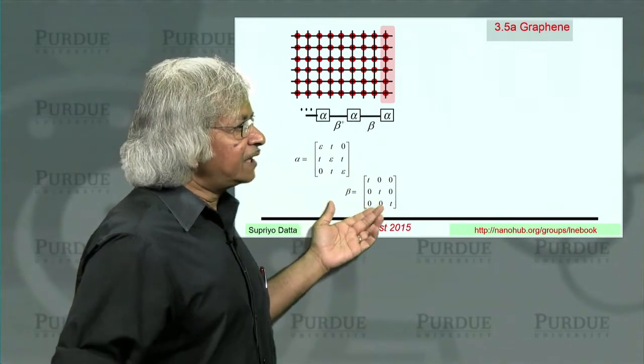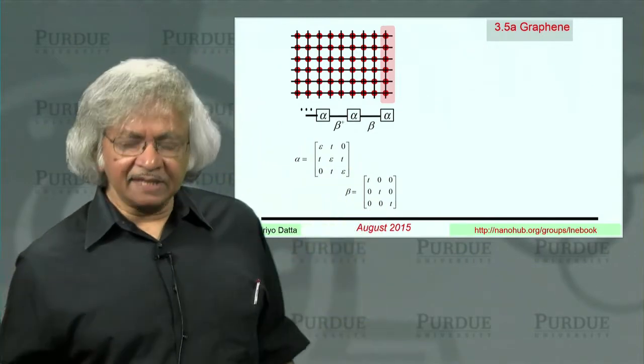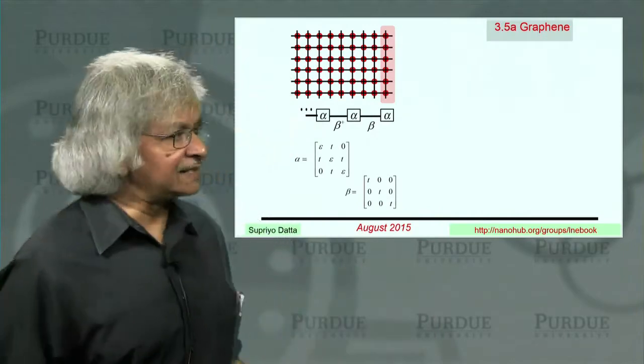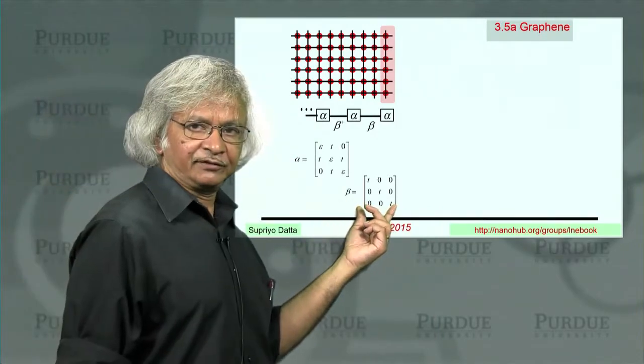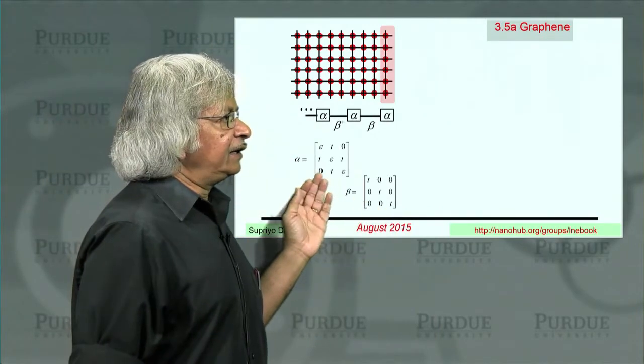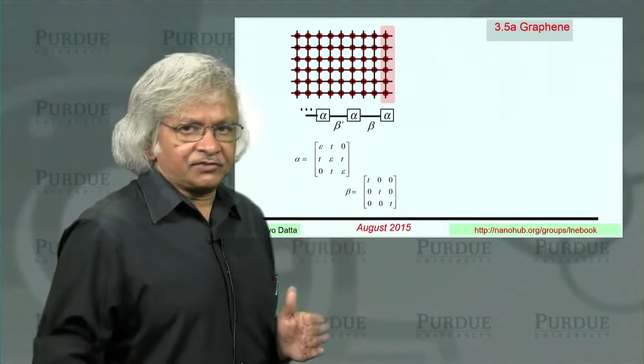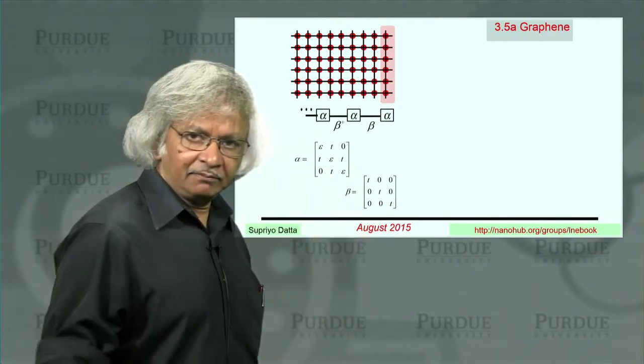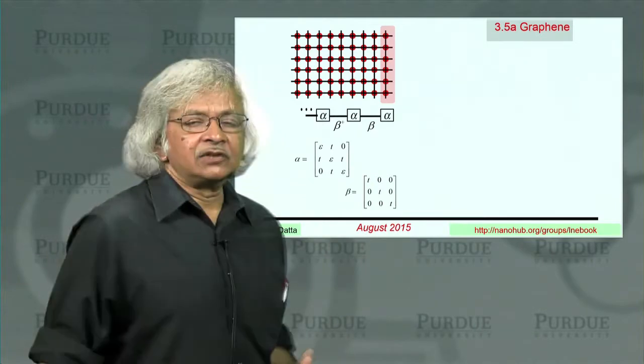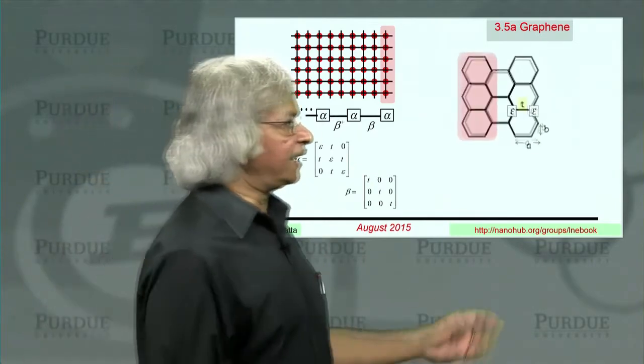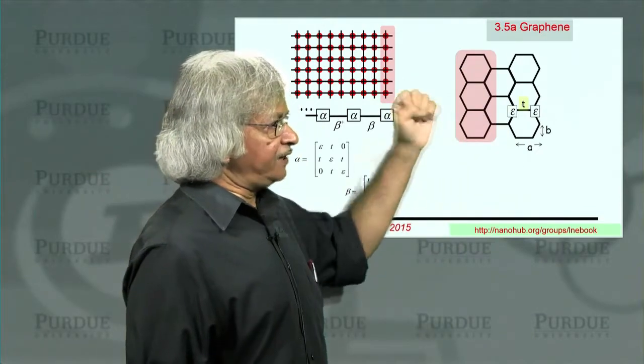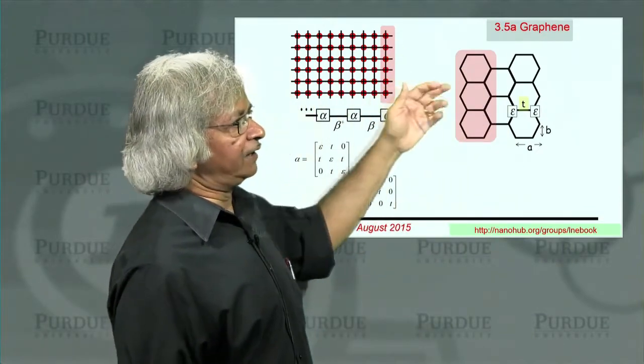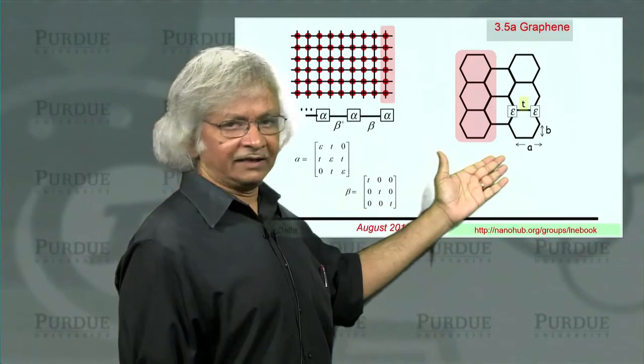And beta, of course, still stays diagonal because it is essentially an identity matrix. And so once you have done a basis transformation, both alpha and beta can become diagonal. But this is not in general possible because there are problems like, for example, graphene where we don't really have a square lattice, we have this hexagonal lattice.